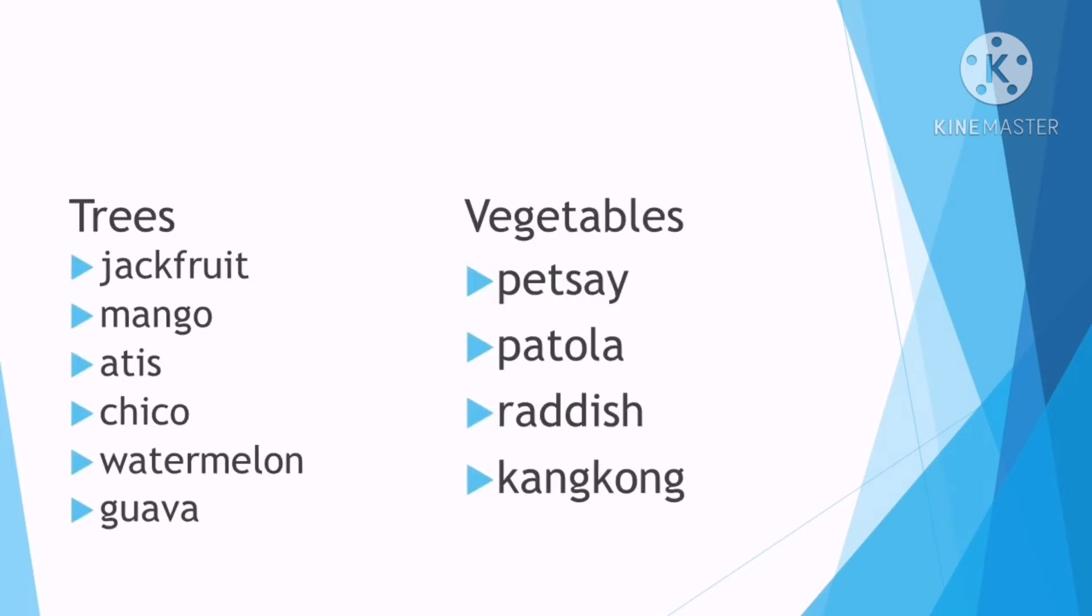The seeds that were mentioned can be classified or can be grouped into two. We have here the trees, and we have the vegetables. Let's try to see the seeds that are going to grow into trees. We have the jackfruit, mango, atis, chico, watermelon, and guava.